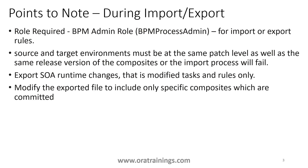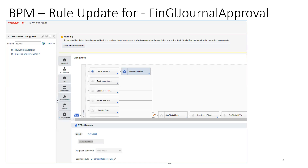When you want to download, make sure that you commit the changes into your composite so that the information is captured in your archive file. As a sample, I modified the Fin GL General Approval composite — I added a custom participant called 'OT Sample Business Rule'. To verify, I committed the changes using the fourth icon in the fusion instance.